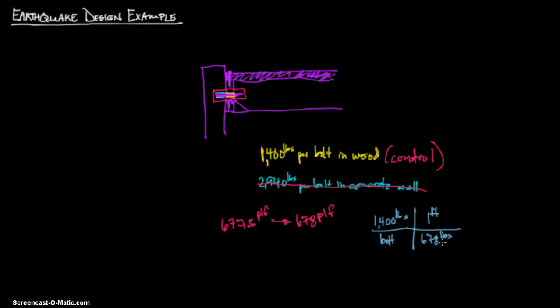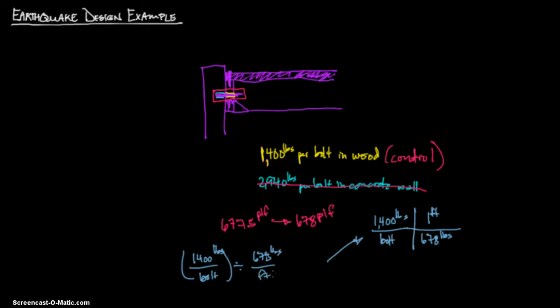I hope that makes sense. I just inverted it to where you're dividing. In other words, you could look at this right here as 1,400 pounds per bolt, and you could divide it by 678 pounds per foot. If you divide it by it, it's the same thing as multiplying by 1 over that. In the end, we will get, you look at the units, and you cross out pounds, you cross out pounds, and you will get foot per bolt.